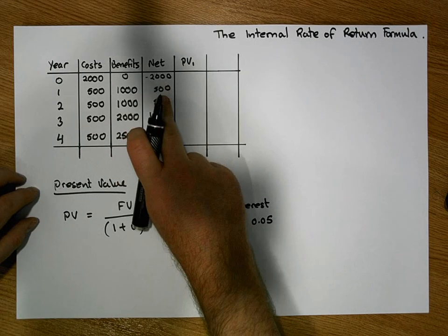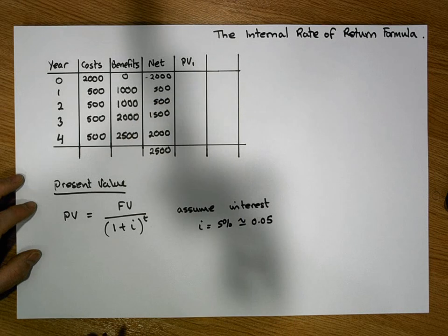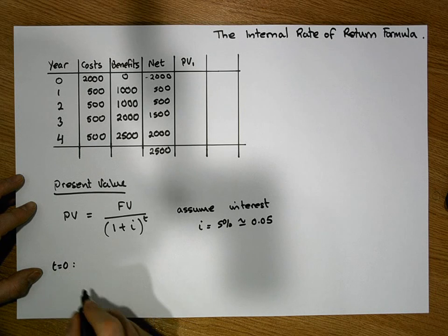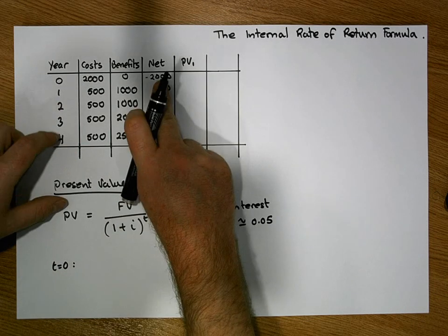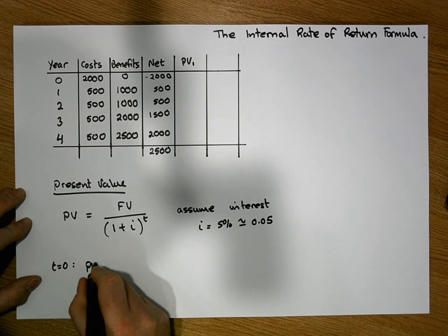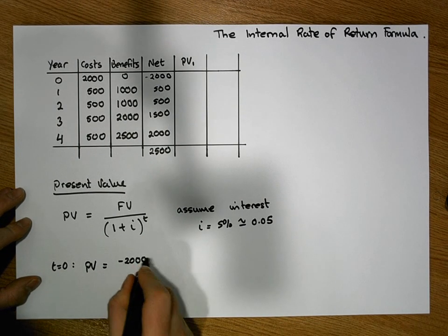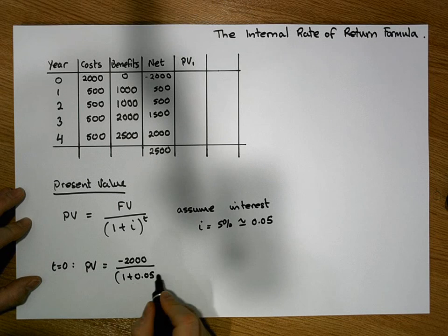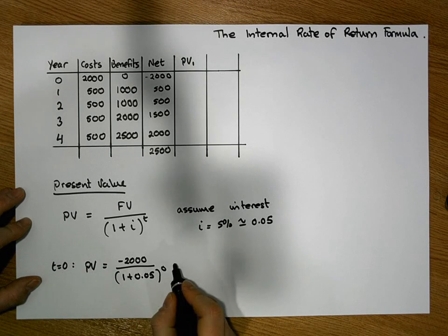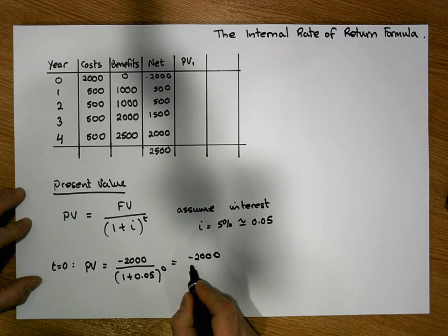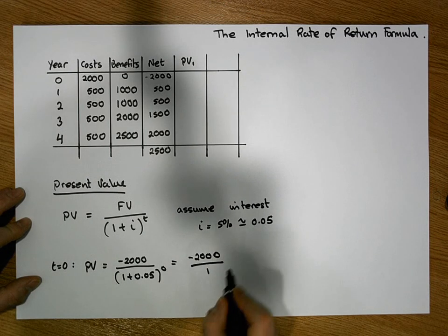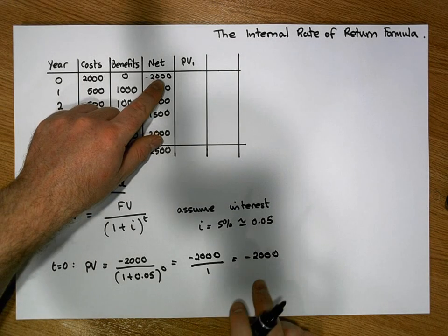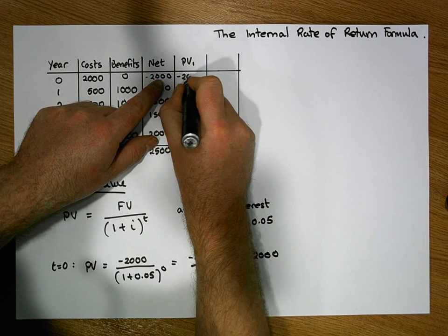We need to calculate the present value for each of these amounts. In year zero, when t = 0, the present value of -€2,000 is -€2,000 divided by (1 + 0.05) raised to the power of 0. Any number raised to the power of 0 is 1, so the present value is simply -€2,000. If you owe €2,000 today, you still owe €2,000 today.